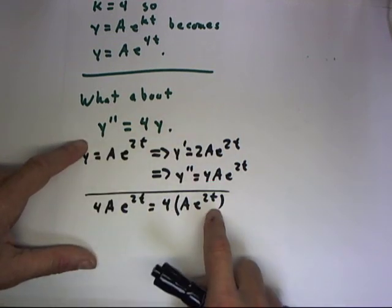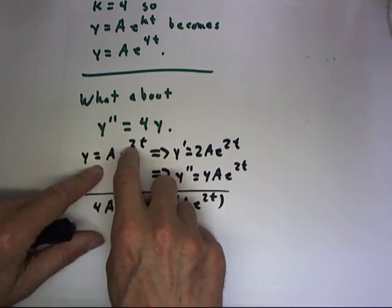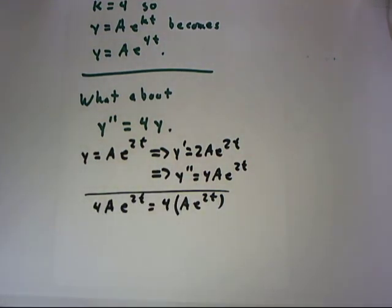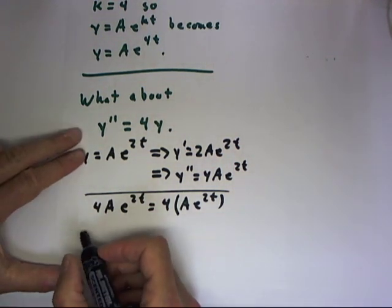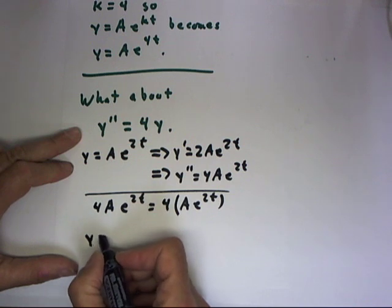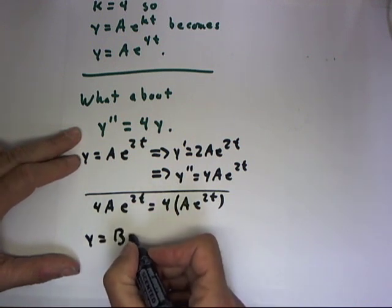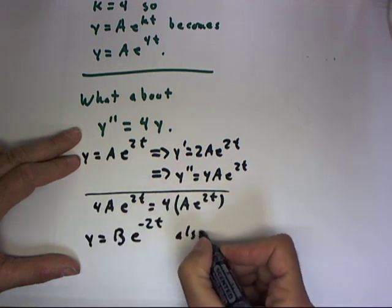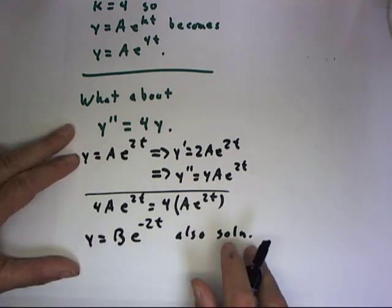Where are we going to get a second solution? It might not be completely obvious, but ae to the negative 2t is also a solution. Now, I'm going to write this as y equals b e to the negative 2t is also a solution, and you can verify that.